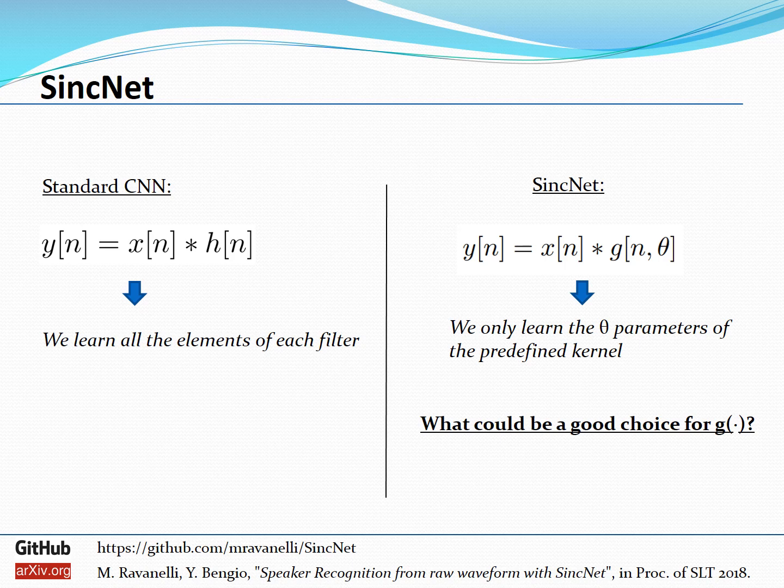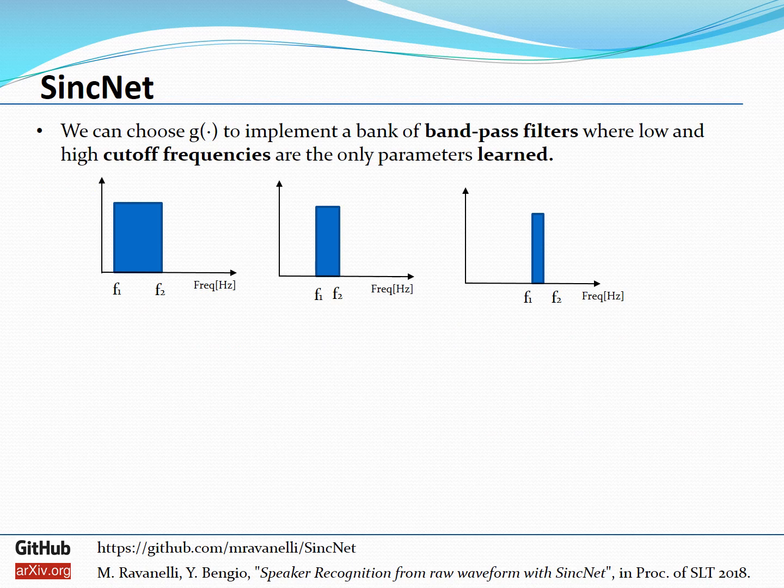Okay but how can we do it? In standard CNN we basically perform a convolution between an input signal and a set of filters and we learn all the basic elements, all the basic tabs of each filter. In SincNet we propose to do something different because we perform a convolution between the input signals and a predefined kernel that depends only on a few parameters. So this predefined kernel basically injects our prior knowledge into the problem. So the question now is what could be a good choice for G for our predefined kernels?